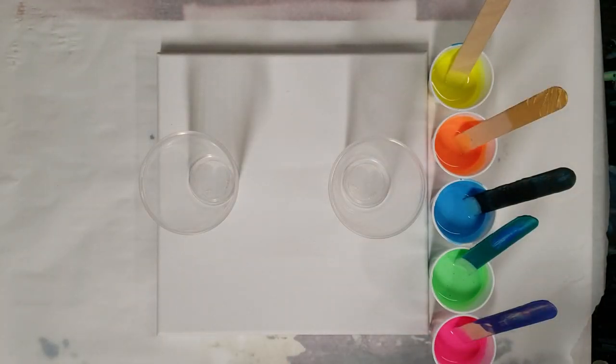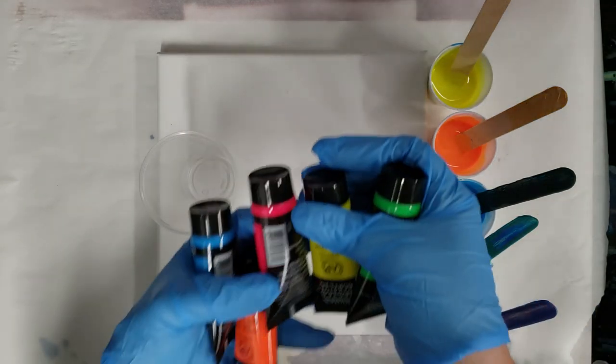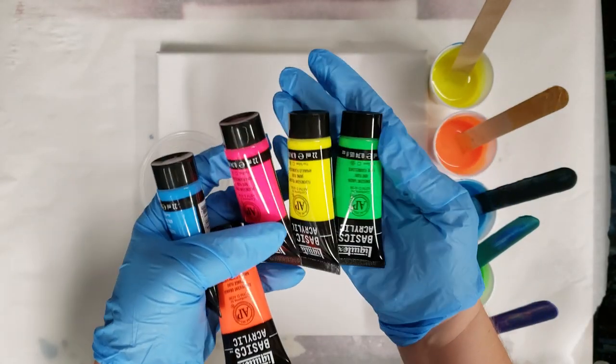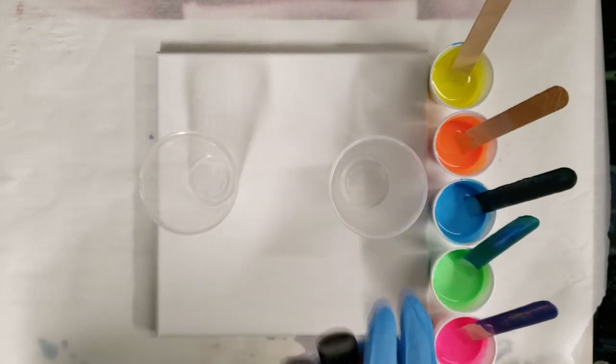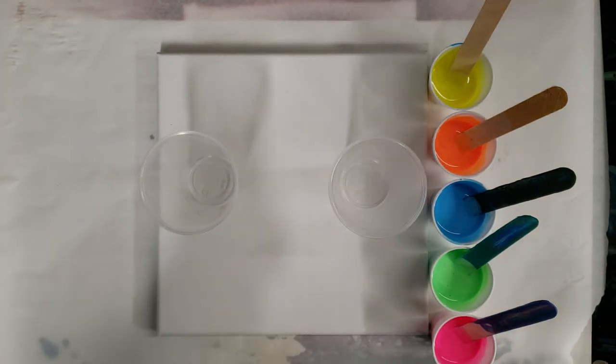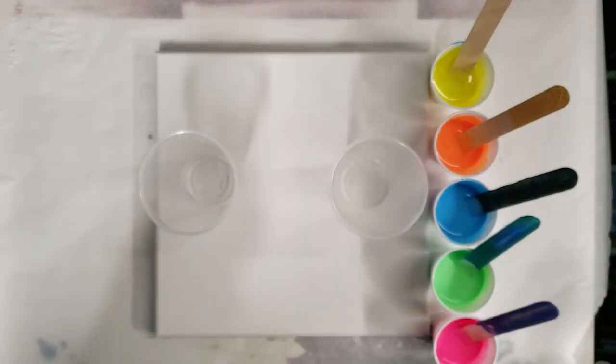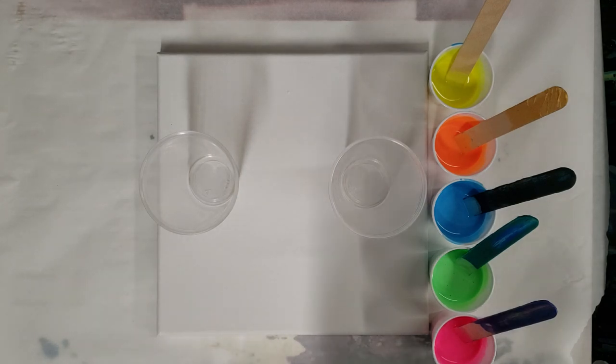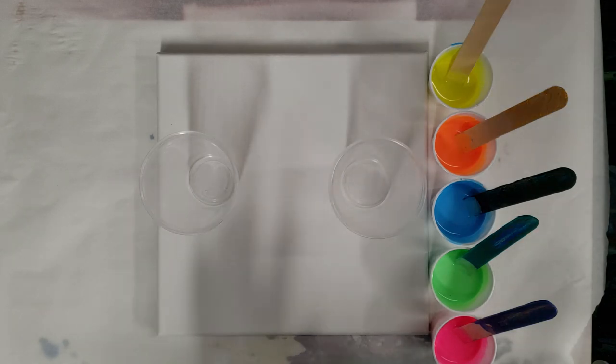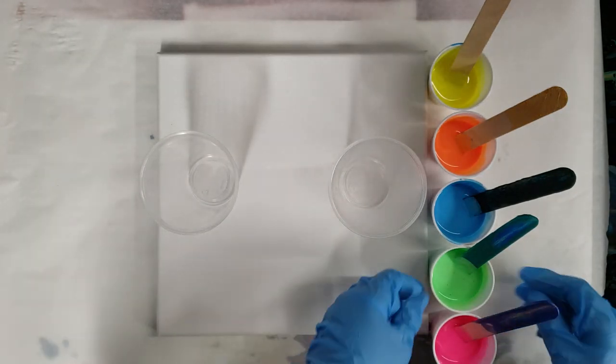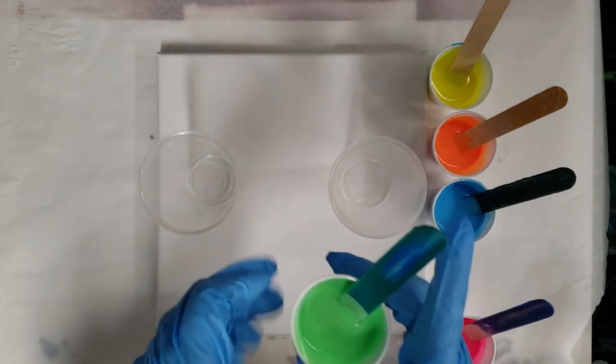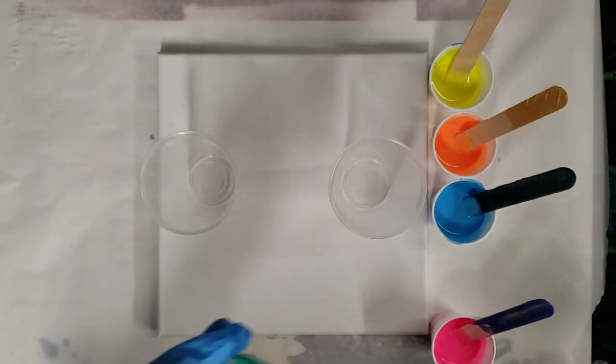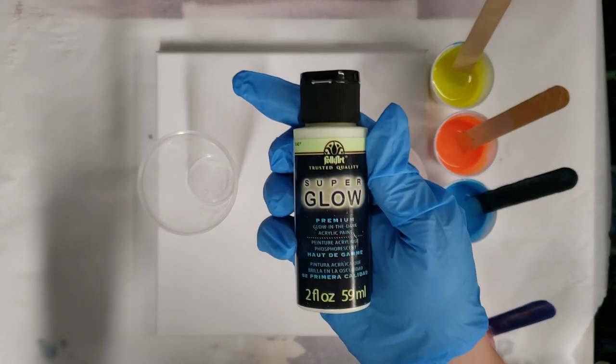I'm trying out some new paints that I got. These are the Liquitex Basics, and it came in a set like this of the six neon ones. I used my coupon at Michaels, so it was not very expensive. One other note is that in the green I also have glow-in-the-dark paint. I put some of the Folk Art Super Glow in there, so hopefully we'll get some fun glow action.